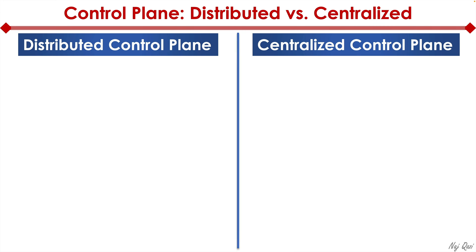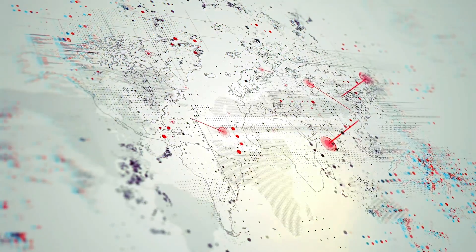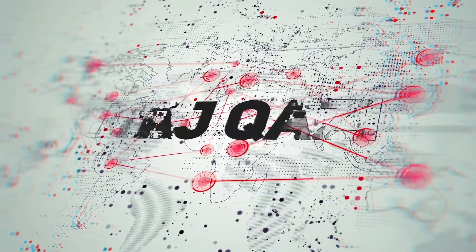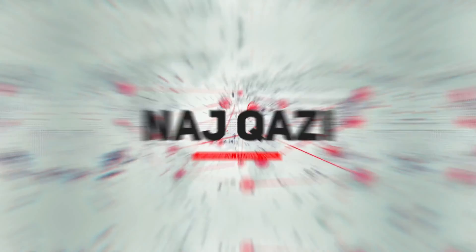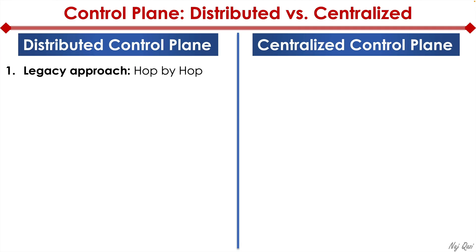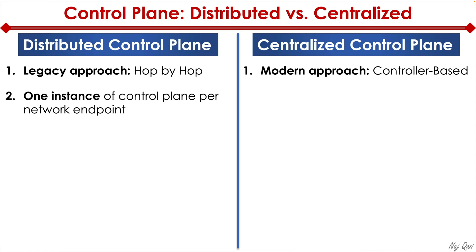SDN, as I alluded to earlier, has a centralized control plane. What are the pros and cons of distributed control plane versus a centralized control plane? I'm glad you asked because that's exactly what I'm going to show you here side by side. Distributed control plane is a legacy, hop-by-hop approach. Centralized control plane is a more modern, controller-based approach.